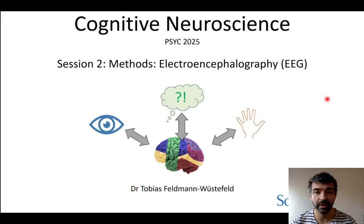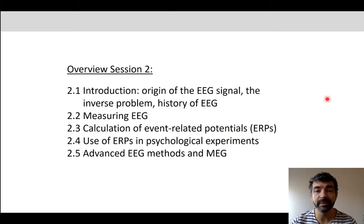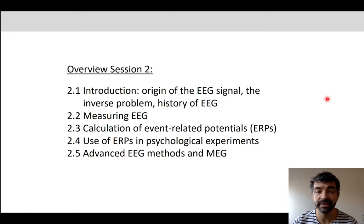Welcome to the second session in cognitive neuroscience in the spring semester of 2021. Today we will be talking about electroencephalography, or EEG. As an introduction, I will first talk about the origin of the EEG signal in the brain, the so-called inverse problem, and the history of EEG. Then we will talk about how EEG is measured in the lab and how event-related potentials or ERPs are calculated, which is a very useful and powerful tool that psychologists can use in their experiments. I will also give you a few examples of how ERPs were used in experiments, and last but not least, we will look at advanced EEG methods and MEG.